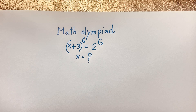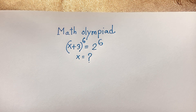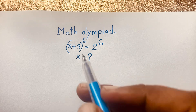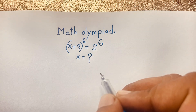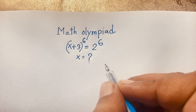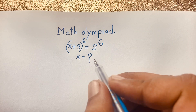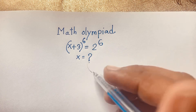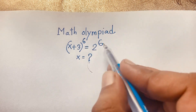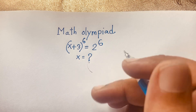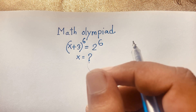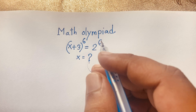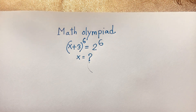Hello everyone. In this video, we have solved a nice math period question: (x+3)⁶ = 2⁶. We have found out what is the value of x in this exponential expression. Here the exponent is same and you can see the base is equal, so x is equal to negative 1. This is our final answer. But for x to the power 6, let's start.